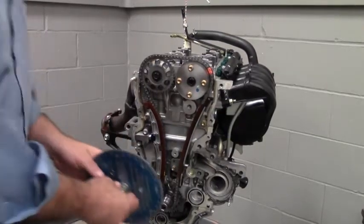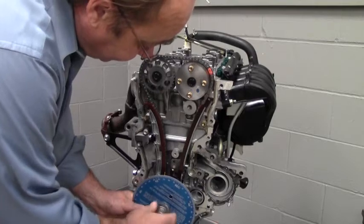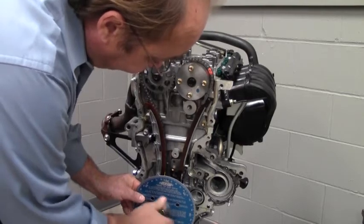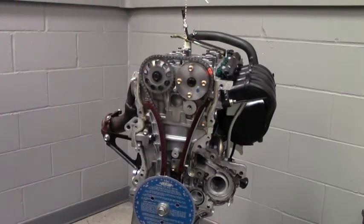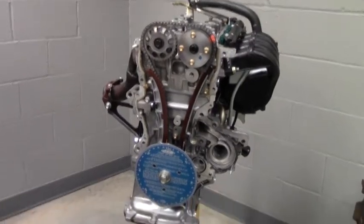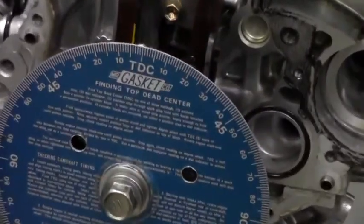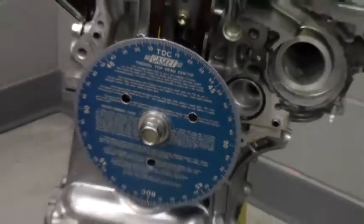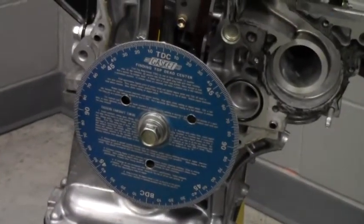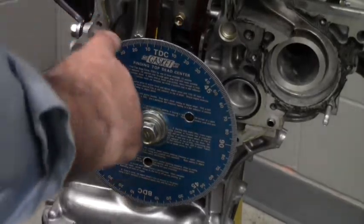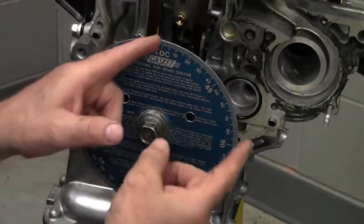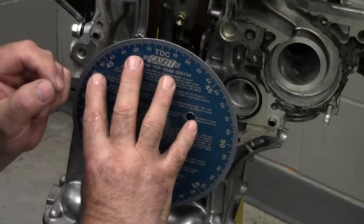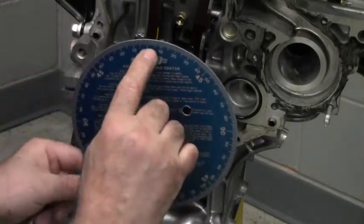This degree wheel is laid out with bottom dead center and top dead center, but the numbering system only goes in 90 degree increments. So that tells us if we're before top dead center, after top dead center, and then we have before bottom dead center and after bottom dead center. We have to take into account the direction that we're going to turn the engine itself. Being that this engine does turn clockwise, any number system between zero and 90 this way is before top dead center because we're coming up to it.